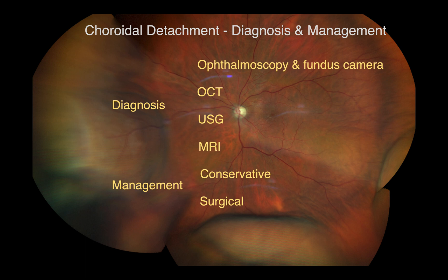A conservative approach can be chosen in mild to moderate cases, and detachment may be closely observed until it resolves. Drainage of serous fluid or blood is indicated when there is a flat anterior chamber with lenticulocorneal touch, non-resolving detachment with conservative treatment, central apposition of the retina, or severe ocular pain with elevated pressure.